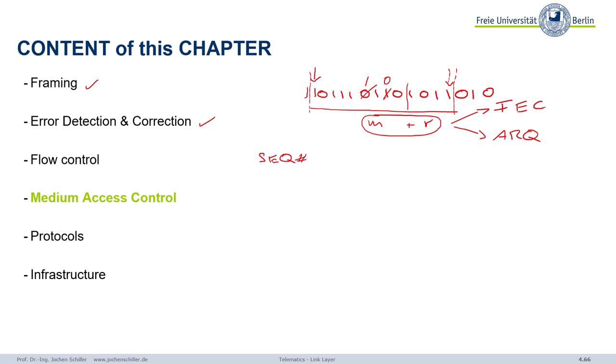We learned we need acknowledgements and negative acknowledgements. We also learned that we have to control the flow of packets, because a big computer may flood a tiny one — think of Internet of Things — and the little one must be able to say stop. We limit the data flow using schemes like stop-and-wait and sliding window. With these three basic mechanisms, we know how to create frames, how to control them, and how to check for errors. But there is a bit more to do, which we will cover now: medium access control.